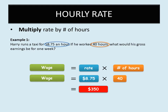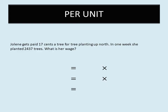Let us look at another example. In this example we're going to calculate salary per unit. What do we mean by per unit? Jolene gets paid 17 cents a tree for planting trees up north. In one week she planted 2,437 trees. What is her wage? When we say per unit, it means for every tree she plants, or for every item that you produce. The item being produced here is the trees she's planting.